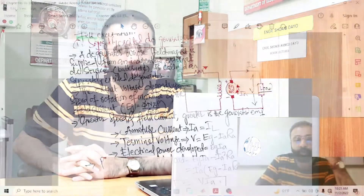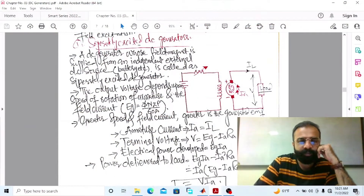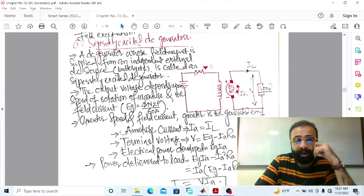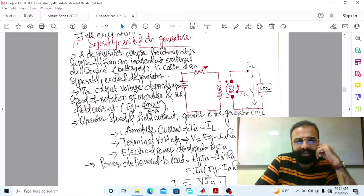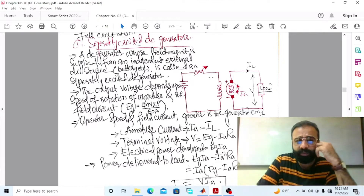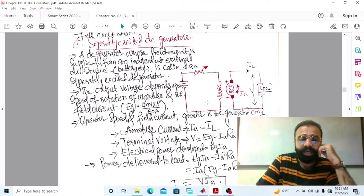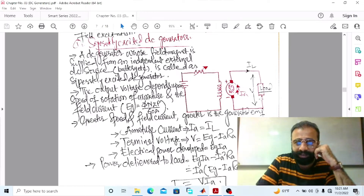Let's do the MATLAB simulation of the separately excited DC generator connected with the load. Our main objective of this experiment is to implement this separately excited DC generator load circuit diagram on MATLAB software. The separately excited DC generator is defined as the generator whose field magnet winding is supplied from an external DC source like a battery.